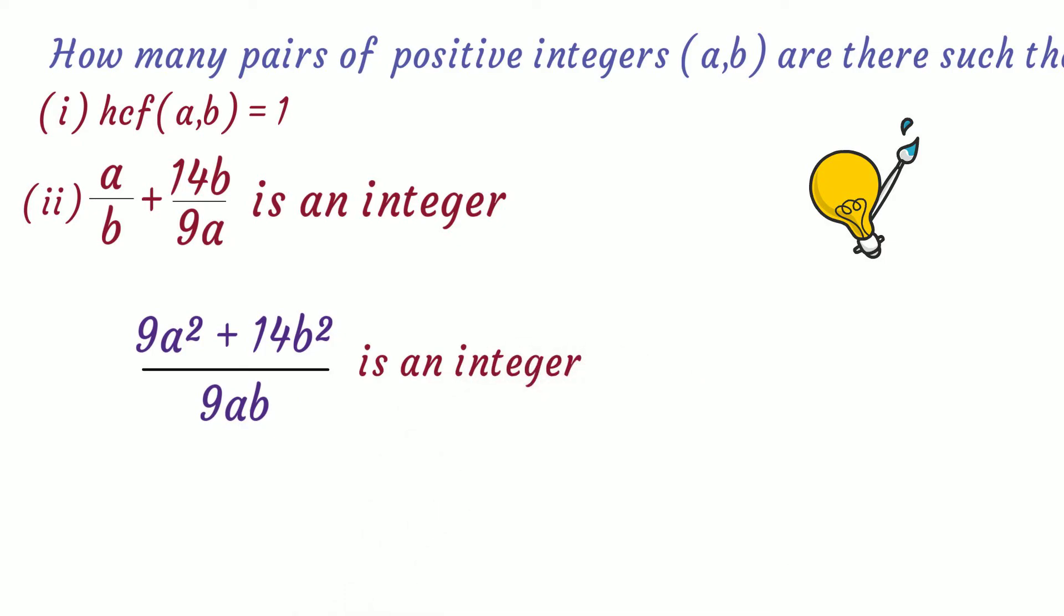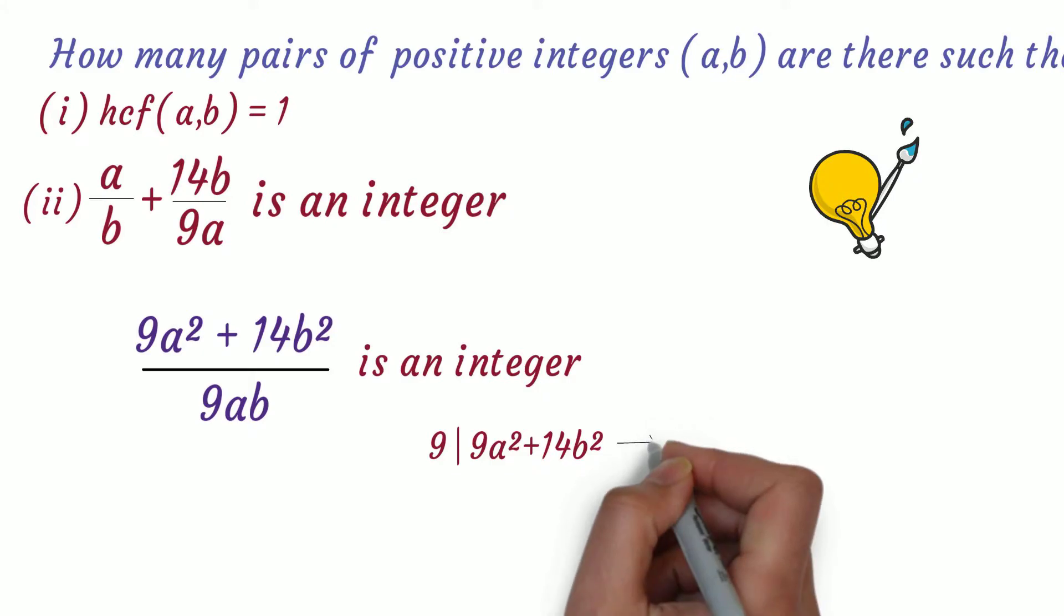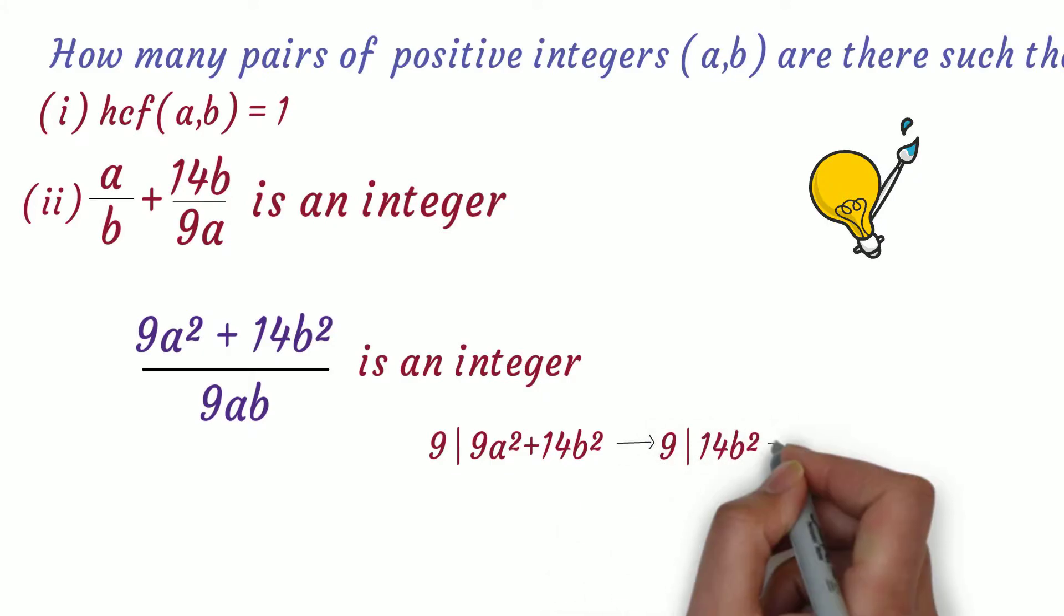Since 9 divides the denominator, 9 must also divide the numerator. And 9 already divides 9a², so 9 must divide 14b². Since 9 and 14 have no common factor, 9 must divide b². This means 3 divides b.